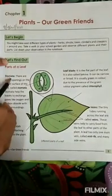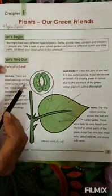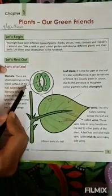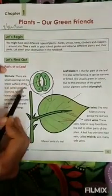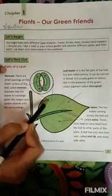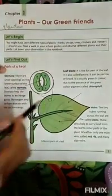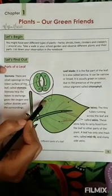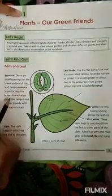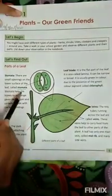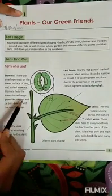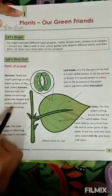Now, let's look at stomata. There are small openings on the lower surface of the leaf called stomata. Stomata helps the leaves to exchange gases like oxygen and carbon dioxide with the surroundings.